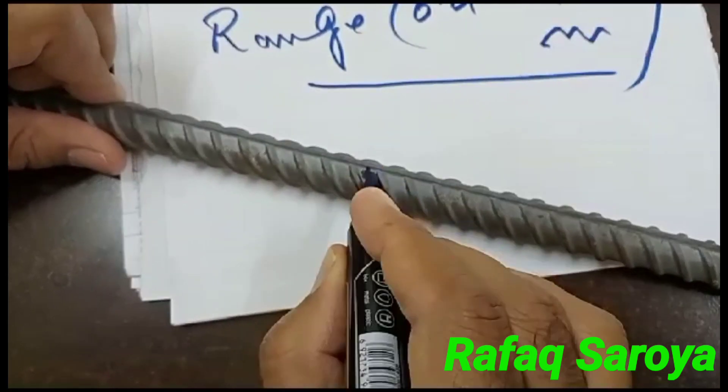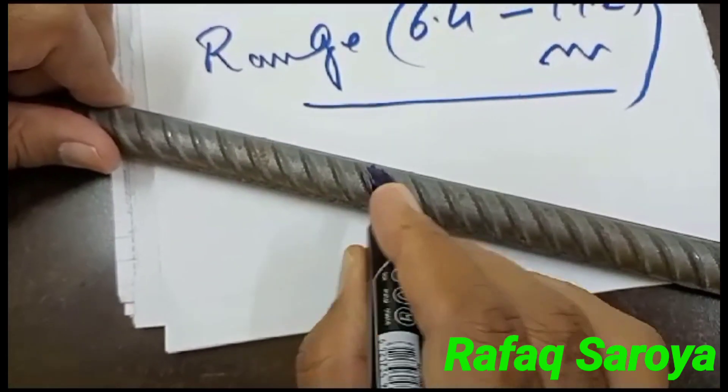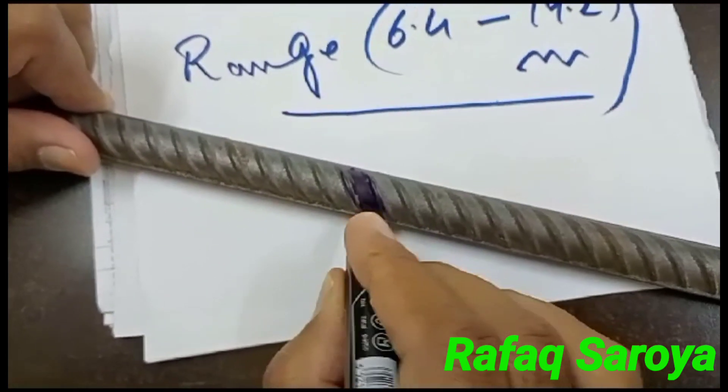You see this one. So this I have shown you, this is known as rib spacing. Try to understand, this is the rib spacing.